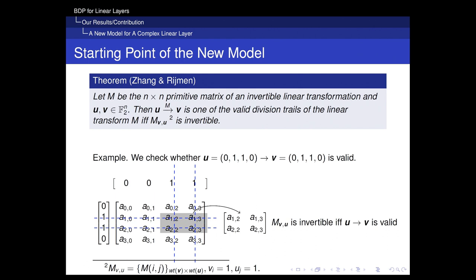Our starting point for the new model is the theory proposed by Jeon and Raymond in their method. They find that if U→V is a valid division trial, then the sub-matrix M^{VU} is always invertible. For example, to check whether U and V form a valid division trial over matrix M, we put U and V in their positions, extract the sub-matrix M^{VU} according to the one-elements of U and V, and check whether it is invertible. Since U and V have equal Hamming weights, M^{VU} is always a square matrix, and if it is invertible, then U→V is valid.